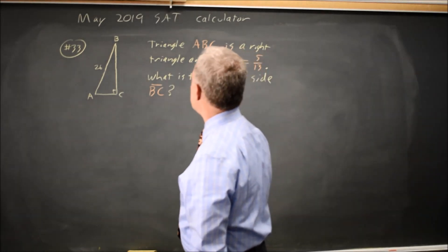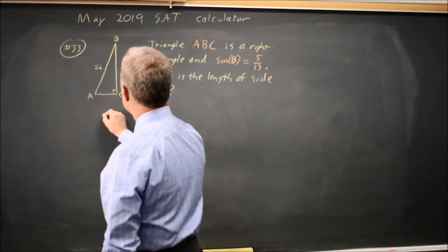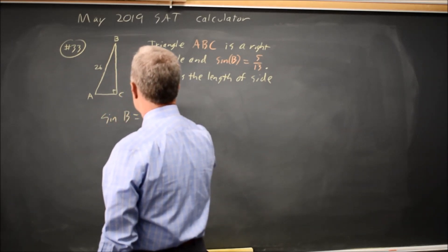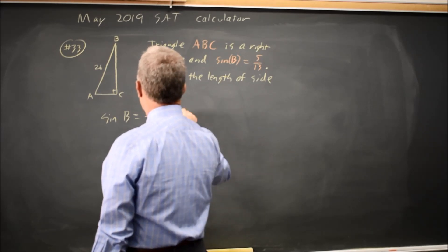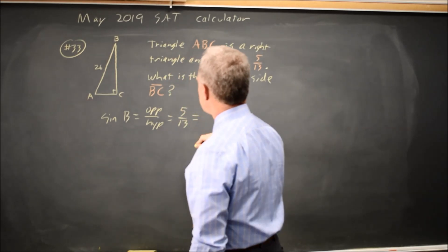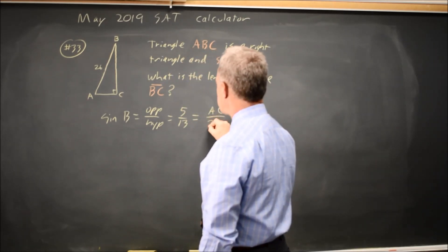So the sine of angle B is 5 over 13. The sine of B equals the opposite over the hypotenuse. And we're told that 5 over 13 equals the opposite, which is AC, over the hypotenuse, which is 26.